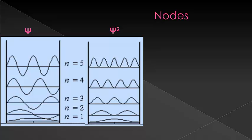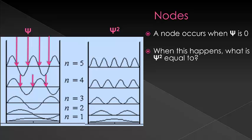Now let's talk about a special place that occurs in both the particle in the box model, as well as hydrogen and multi-electron atoms. A node occurs when psi is equal to zero. If psi is equal to zero, what is the probability density equal to?